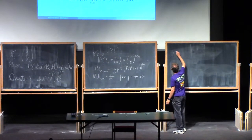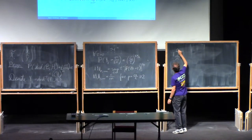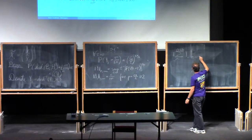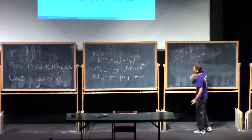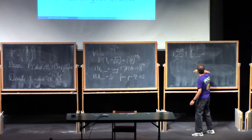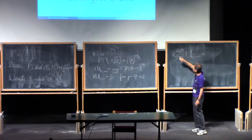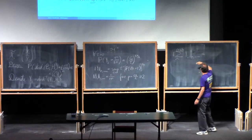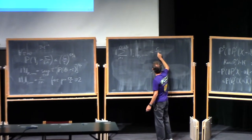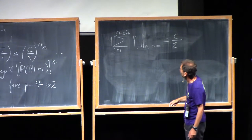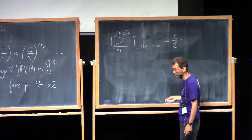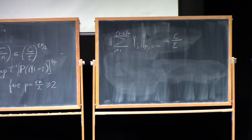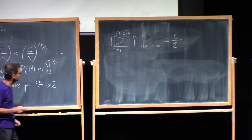Then we can write that the norm of the sum j from 1 to (1 minus epsilon)n of y_j in the weak LP norm is less than or equal to — by a trivial triangle inequality — we multiply by the number of y_j's, so each norm is c over epsilon n, and multiplying by (1 minus epsilon)n gives c over epsilon. Actually c times (1 minus epsilon) over epsilon, but 1 minus epsilon is a small change and we would not gain anything from it.